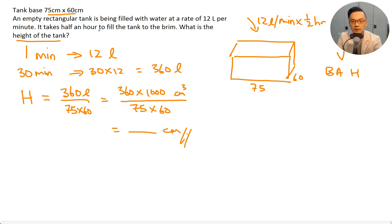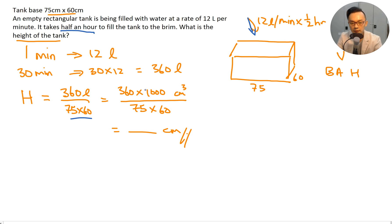In this question, first find the total volume of water poured in: 1 minute gives 12 liters, and altogether 30 minutes gives 360 liters. Then 360 divided by the base area gives the height. Remember to convert liters to cm³ by multiplying by 1000. So 360,000 divided by the base area gives the height.